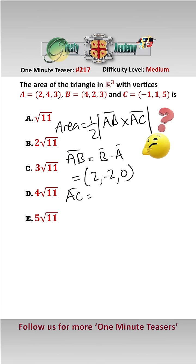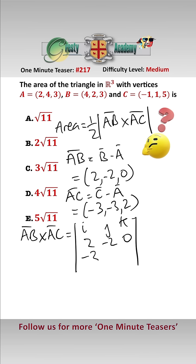And AC, which equals C minus A, is (-3, -3, 2). So now we can do AB cross AC, and that is the determinant with i, j, k in the first row, 2, -2, 0 in the second row, and -3, -3, 2 in the third row.